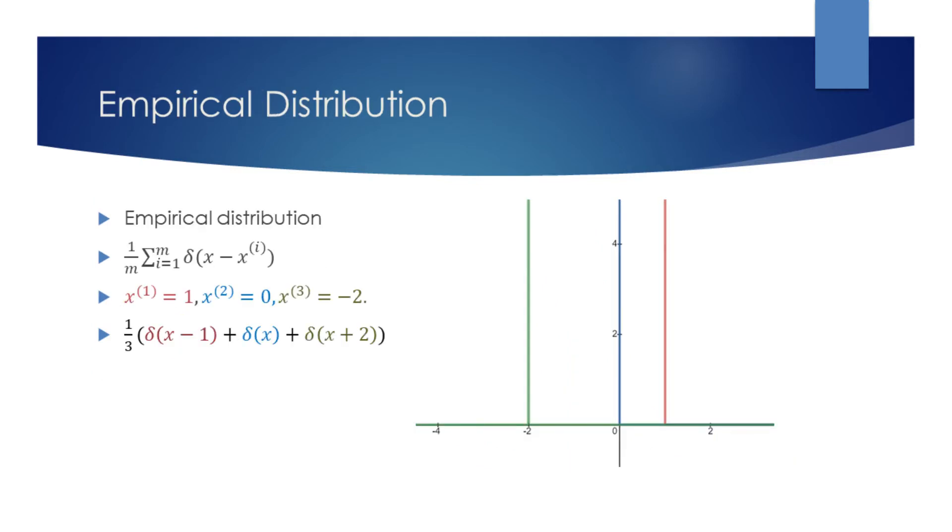Empirical distribution for continuous random variables is constructed using Dirac delta functions. In case of discrete random variables, we could simply use the categorical distribution. This distribution assigns the probability mass 1 over m to each of the m points.